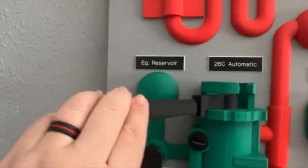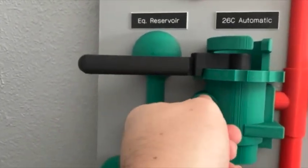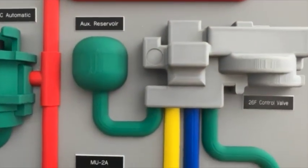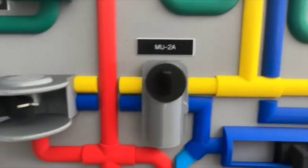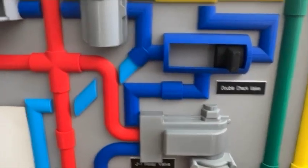We have the equalizing reservoir with the regulator valve, the cutout for the automatic 26F control valve, the MU-2A for the independent, and the double check valve so you could demonstrate something like the air being set from the main reservoir.